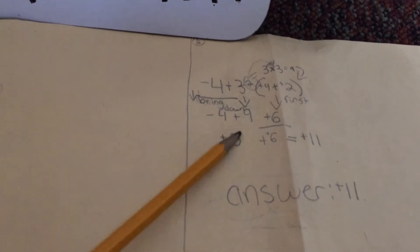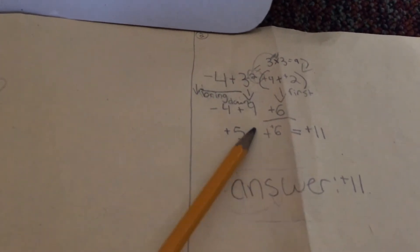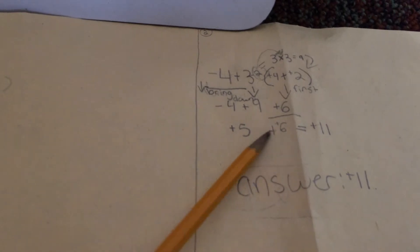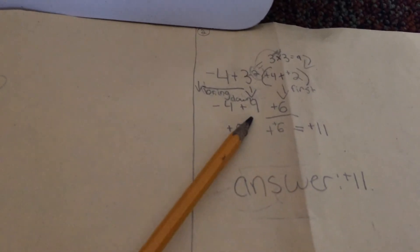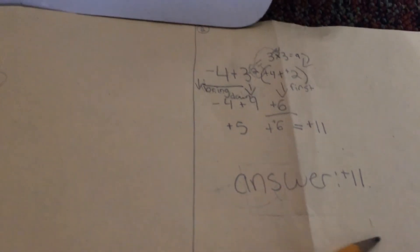And put everything down. And then four plus nine plus that, I guess, equals six. And then five plus six equals eleven. So the answer is eleven.